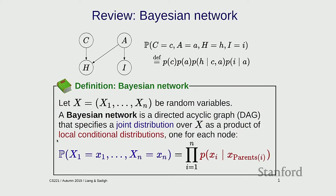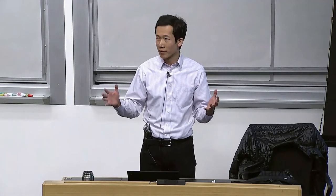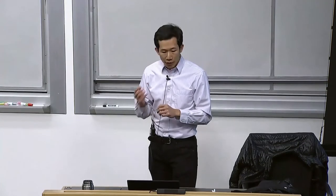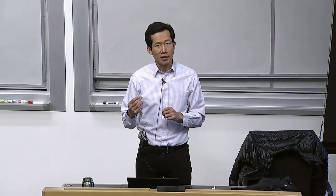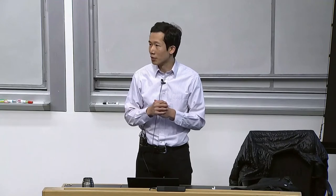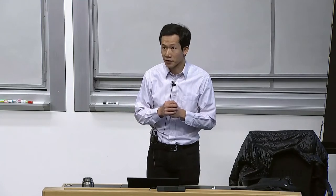To sum it up, you can think about Bayesian networks as factor graphs plus probability. They allow you to define very large joint distributions over lots of random variables using factor graphs, which allow you to specify things very compactly. Moreover, we saw glimpses of how we can use the structure of factor graphs to permit efficient inference.